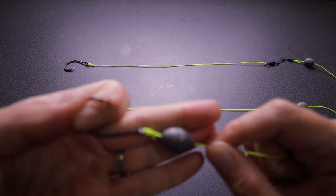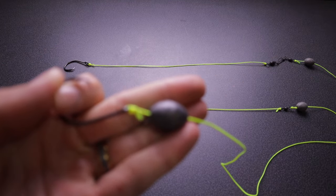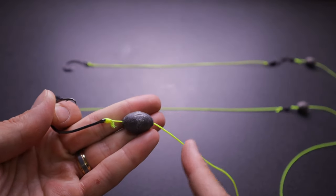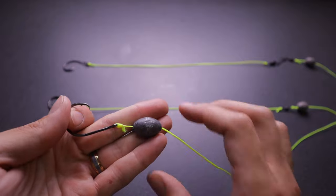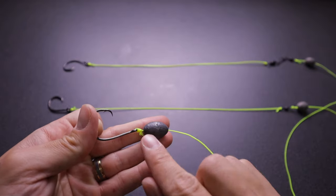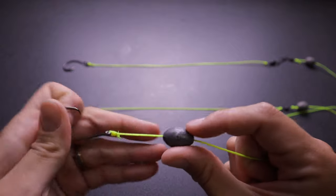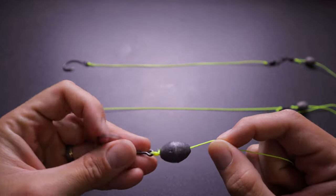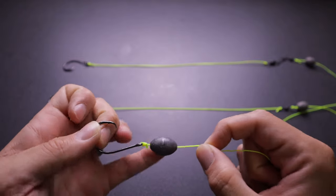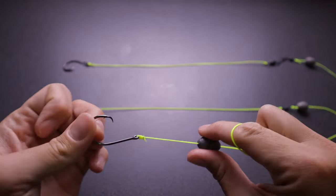Now one of the negatives about the knocker rig is if you get broken off, it's actually going to be right here close to the hook. What happens is you're not only going to lose your hook of course, but you're going to lose your sinker.